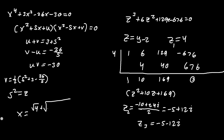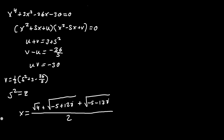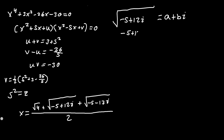We now have two complex roots z2 and z3. The corresponding x solution is the square root of (negative 5 plus 12i) plus the square root of (negative 5 minus 12i), all over 2. We need to evaluate the square root of negative 5 plus or minus 12i. We set the square root of (negative 5 plus 12i) equal to a complex number a plus bi.